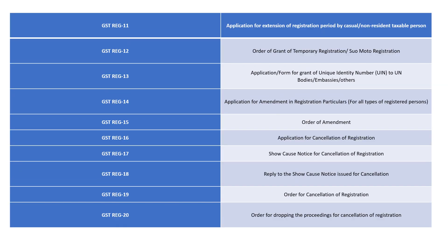GST REG-11 is the application for extension of the registration period by a casual taxable person or non-resident taxable person. GST REG-12 is the order of grant of temporary registration, also known as suo motu registration.